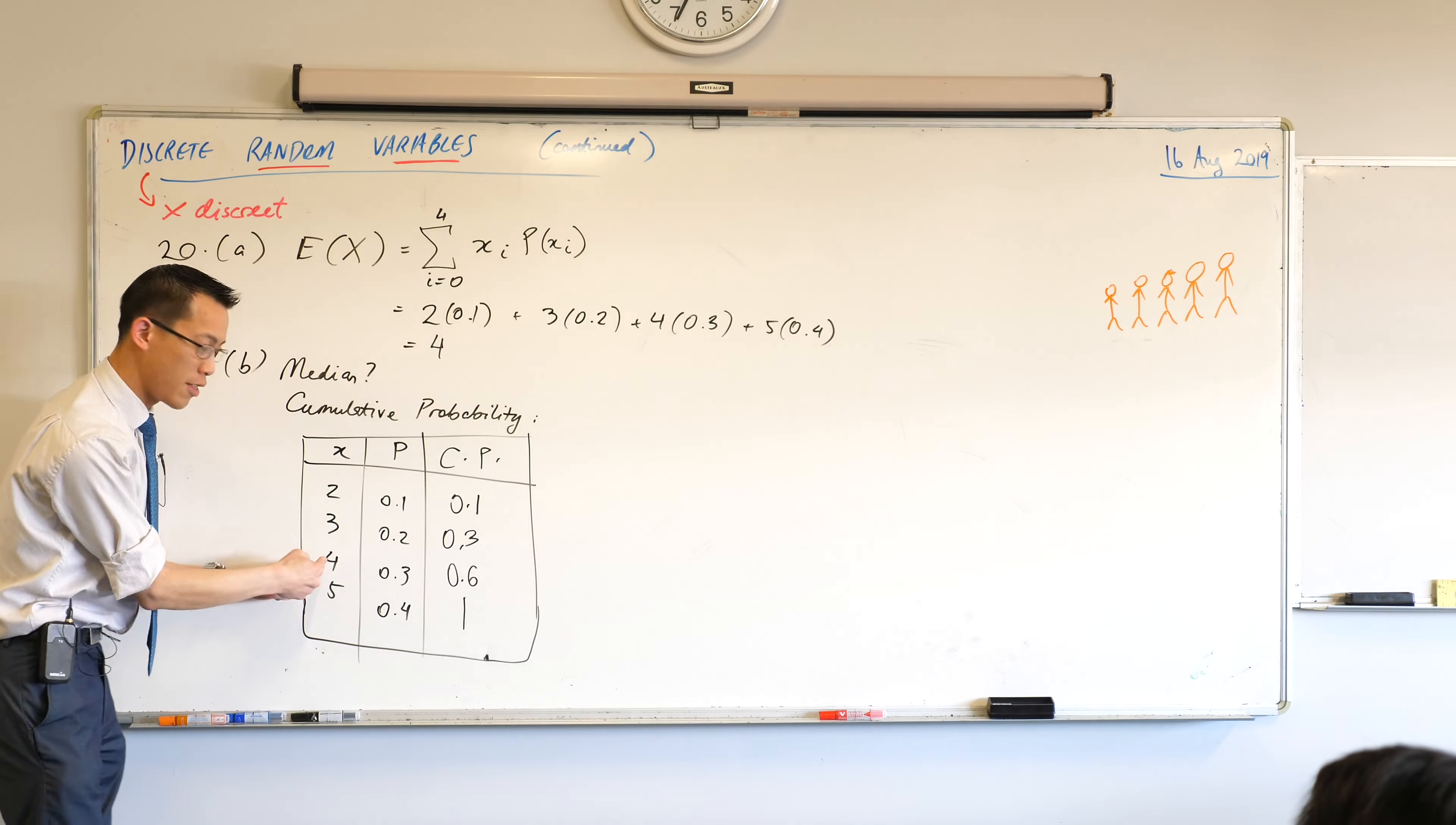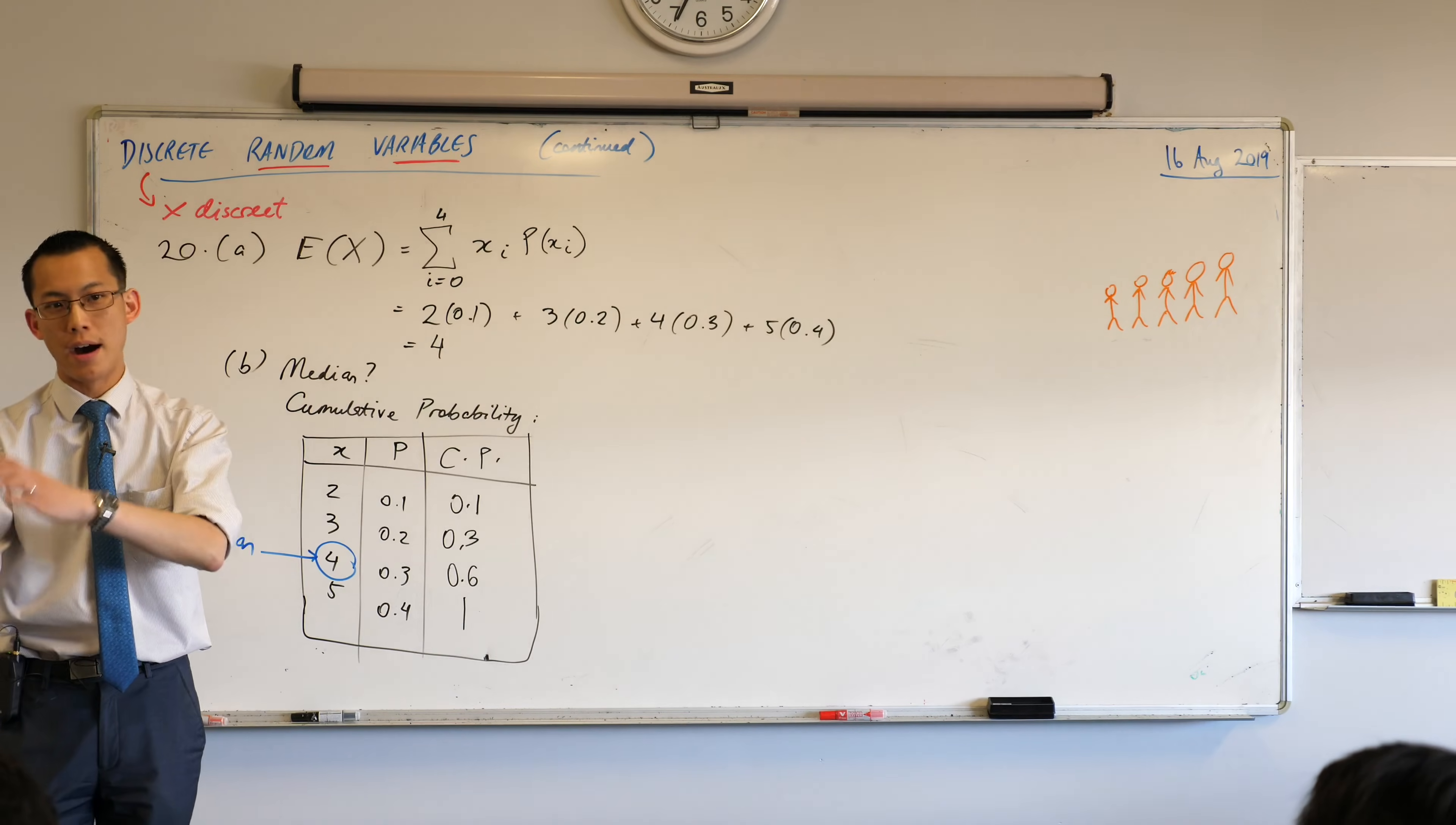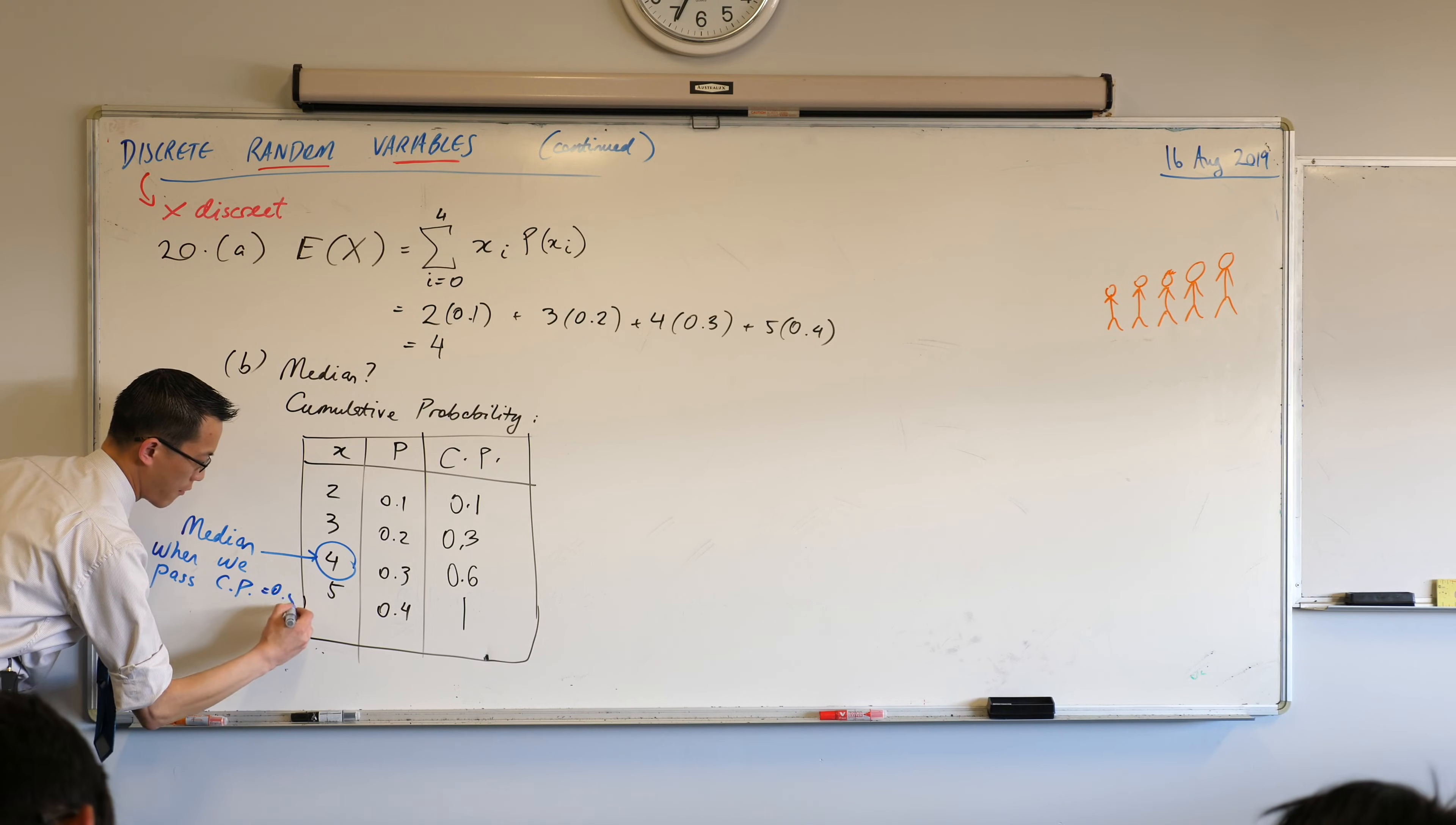Okay, so this value here, this, is the median. It's wherever, what's the first moment, the first instance, that you pass that 0.5 threshold. Might be worth jotting that down. It's, when we pass, the cumulative probability, being 0.5.